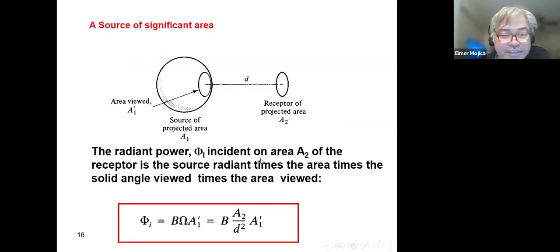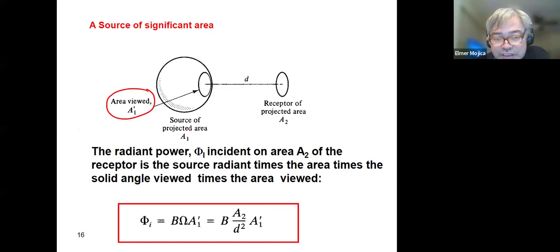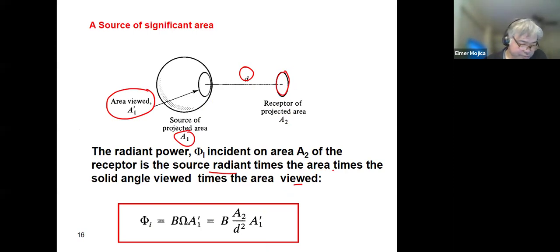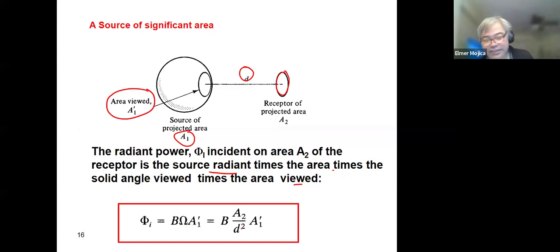You can also have a source of significant area — A-prime-1 is the source projected area A1, and the receptor has a projected area A2, with D being the distance between the two. The radiant power incident on area A2 of the receptor is the source radiance times the area times the solid angle times area, or Φ = B·Ω·A1 = B·A2/D²·A-prime-1.